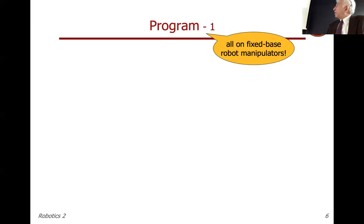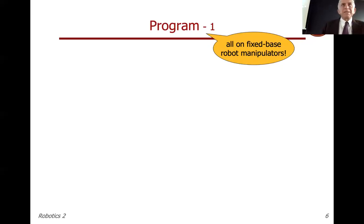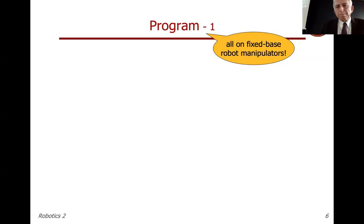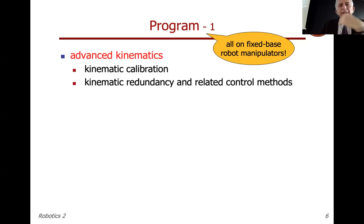Regarding the program: as in Robotics 1, we make a clear sharp separation between mobile base and fixed base. We will deal with fixed-base manipulators, though the dynamic modeling techniques we develop can also be applied to mobile robots. The first set of topics is advanced kinematics. There are two main topics: one is quite short — kinematic calibration. What is kinematic calibration?